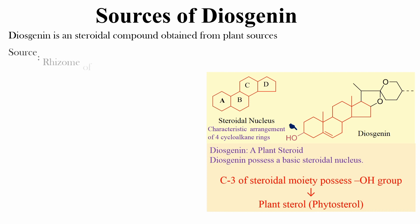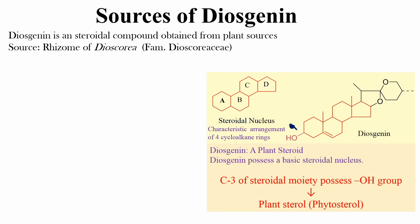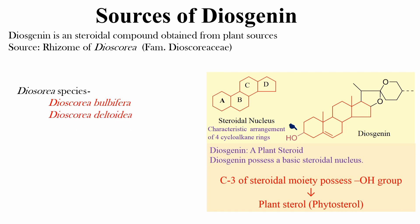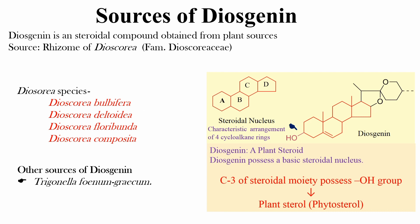Coming to their sources, diosgenin is obtained from the rhizome of Dioscorea belonging to the family Dioscoreaceae. Common Dioscorea species as sources of diosgenin are Dioscorea bulbifera (also known as vedarikan), Dioscorea deltoidea, Dioscorea floribunda, and Dioscorea composita. Diosgenin is also obtained from other sources such as Trigonella foenum-graecum, also known as fenugreek, and from Costus speciosus.